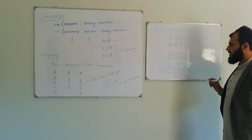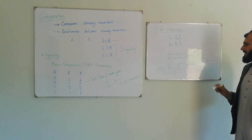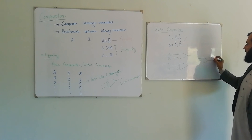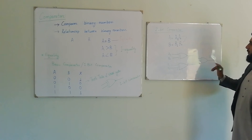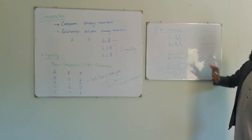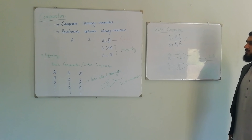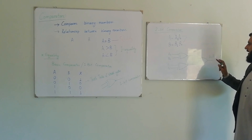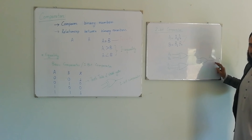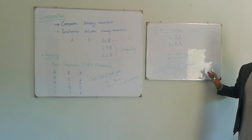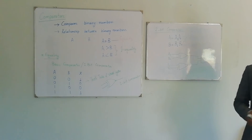The output will be maximum — that is, A will be equal to B — when both of these outputs are equal to 1. This ensures that A is equal to B. This is the example of the two-bit comparator.